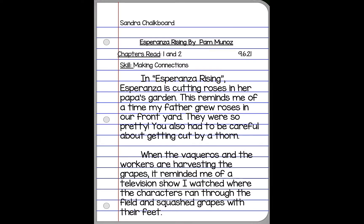Here's an example of how your notebook should be set up when you're making connections. You start by writing your name — here in the example we have Sandra Chalkboard. She's reading the book Esperanza Rising by Pam Muñoz. You also put the title of the chapter in the center of the page, write down the number of chapters you read — here she read chapters one and two — the date of the reading response, and then state the skill. In this case, the skill is making connections. I am now going to read two examples that Sandra wrote about after reading chapters one and two.